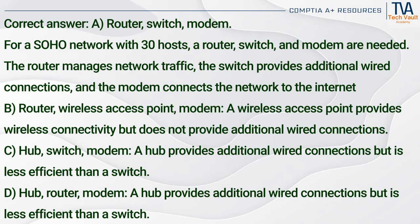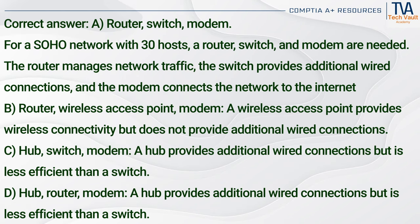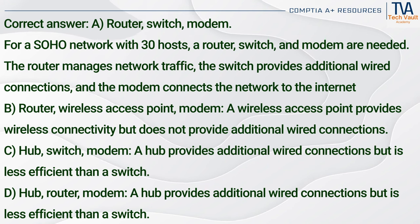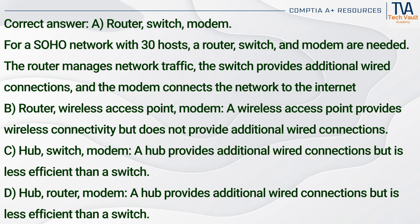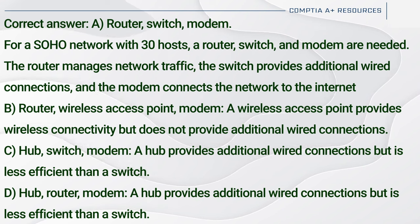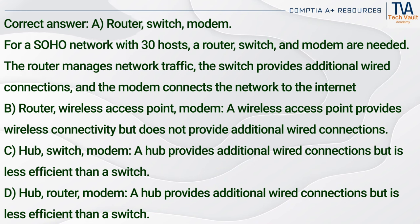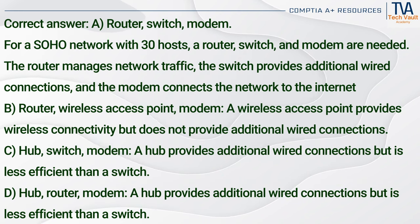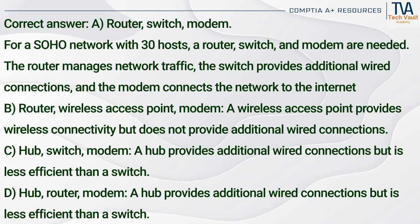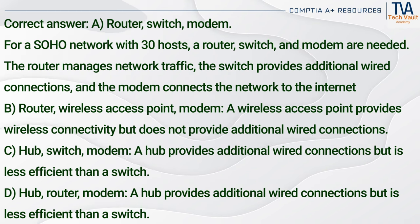Correct answer: A. Router, switch, modem. For a SOHO network with 30 hosts, a router, switch, and modem are needed. The router manages network traffic, the switch provides additional wired connections, and the modem connects the network to the internet. A wireless access point (B) provides wireless connectivity but does not provide additional wired connections. A hub (C or D) provides additional wired connections but is less efficient than a switch.